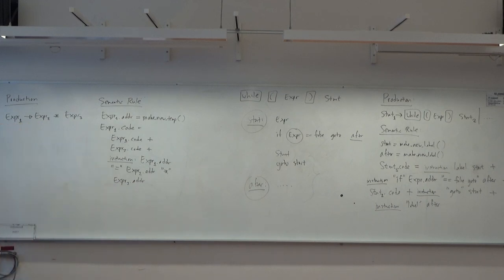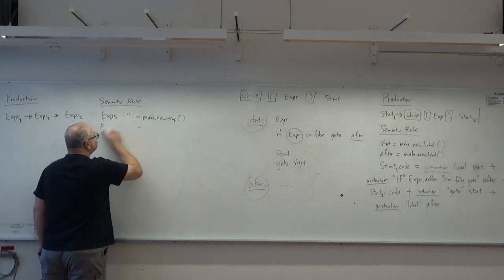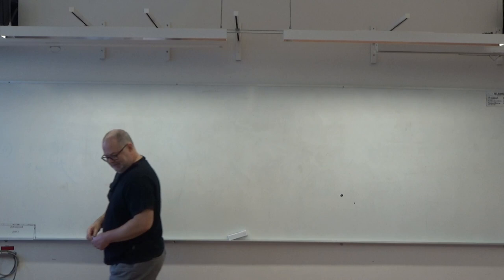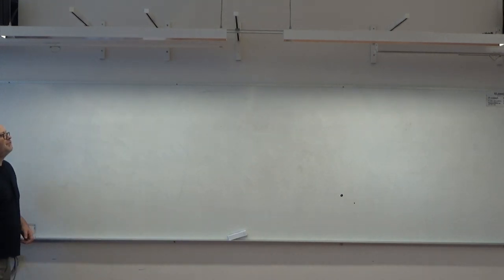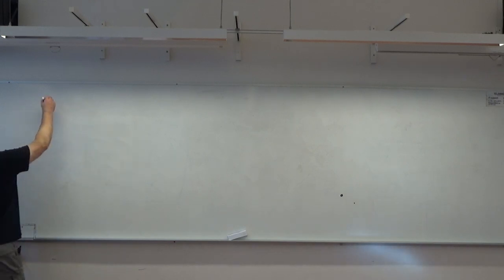We see again that syntax-directed translations let us generate data types, values, temporary variables, and code — it's just attributes we put in the tree. Now let's leave three-address code and start talking about code optimization.